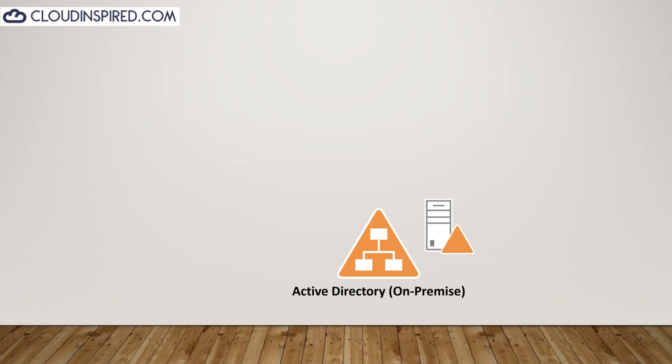Physically, Active Directory is installed on a physical server or virtual machine, and the AD database contains a schema and all objects such as users, groups, and computers. Replication is used to copy those objects to other domain controllers — DCs — for fault tolerance and redundancy, so if one DC fails, users can still log in with no downtime.